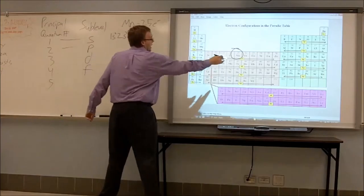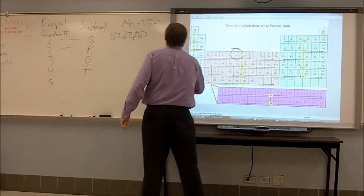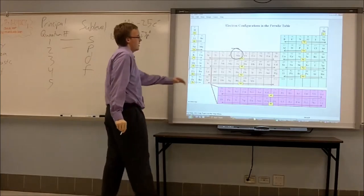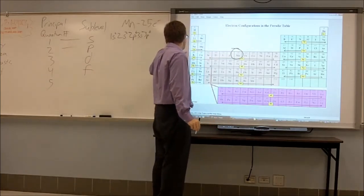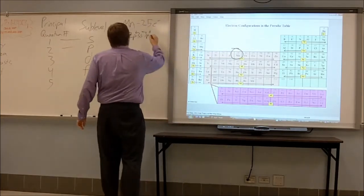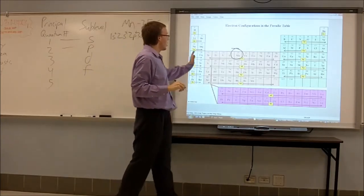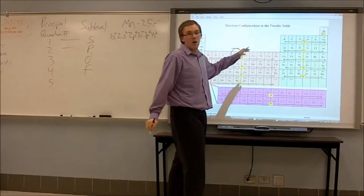So we go down, three, and again we start at the beginning, sub-level S and two. Move over here to the three P group. We know we are not here at manganese yet. So we know that it takes all those electrons, six, three P six.